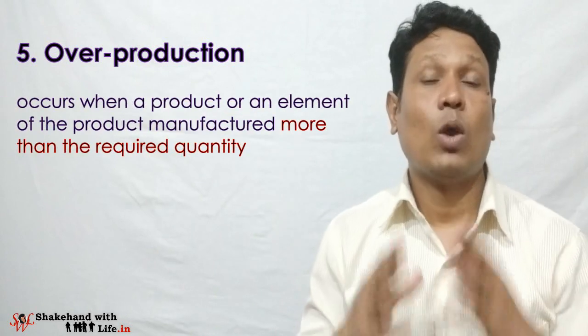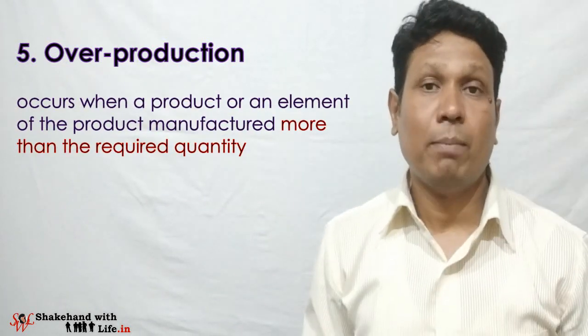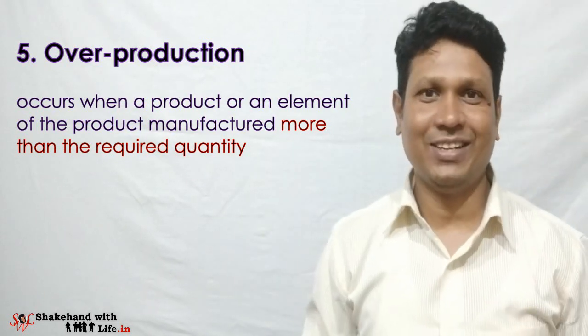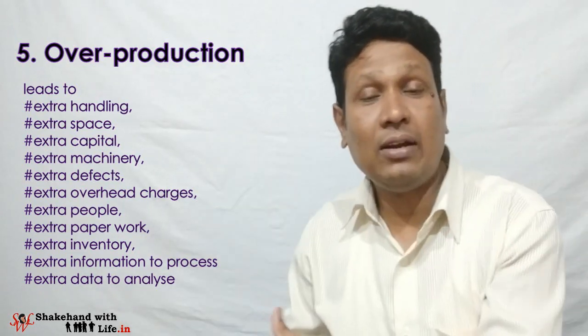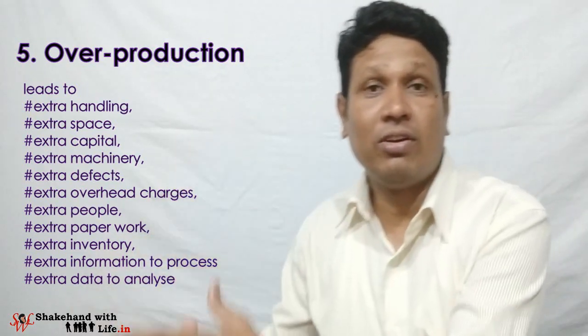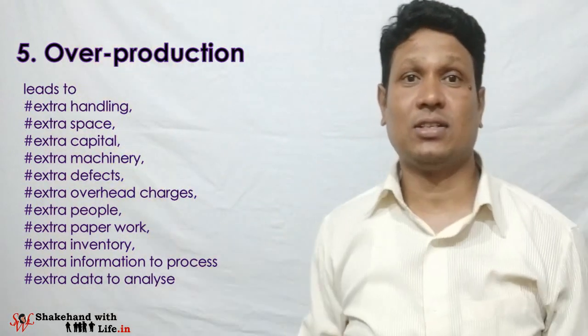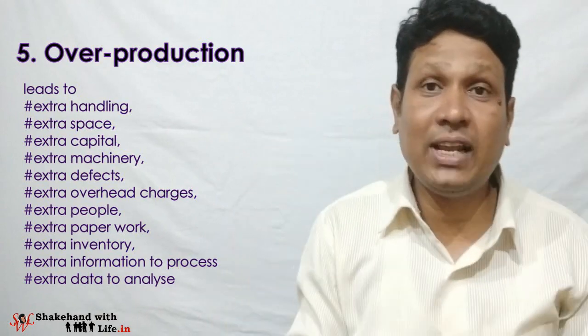Muda No. 5: Overproduction. Overproduction occurs when a product or element of a product is manufactured in more than the required quantity. Overproduction leads to extra handling, extra space, extra capital, extra machinery, extra defects, extra overhead charges, extra people, extra paperwork, extra inventory, extra information to process, and extra data to analyze.